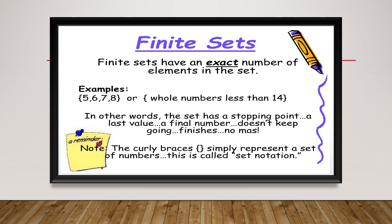Finite sets. Finite sets have an exact number of elements in the set. For example, a set of odd numbers less than 14: 5, 6, 7, 8. This set has a specific number of elements — four members. Finite sets have a stopping point.